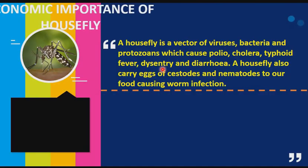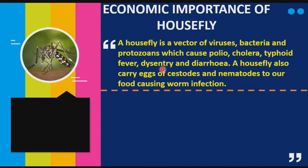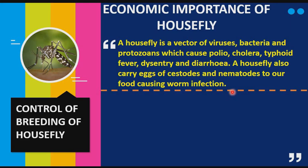Let's look at the economic importance of the housefly. A housefly is a vector of various diseases — it carries viruses, bacteria, and protozoa which cause polio, cholera, typhoid fever, dysentery, and diarrhea. A housefly also carries eggs, cysts, and nematodes to our food, causing worm infection. Since we know the economic importance of the housefly, what are the ways in which we can control the breeding of houseflies?